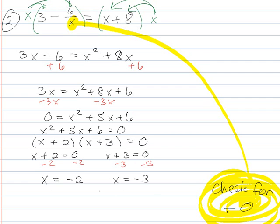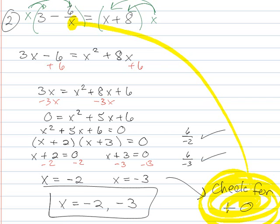So now I've got my answers. I want to check for divide by 0. So if I put 6 over negative 2, that's going to be okay. If I put 6 over negative 3, that's also going to be okay. I'm not going to be dividing by 0. So that means that my solution, I've actually got 2: x equals negative 2 and x equals negative 3.